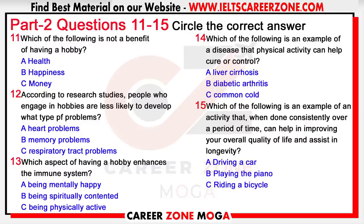Firstly, hobbies can enhance the immune system. Being physically active is great for the body in helping to enhance one's immunity. Physical activity can help prevent or maintain control in some chronic illnesses, such as heart disease, diabetic arthritis, and even some types of cancer. Physical activity done consistently can also help improve your overall quality of life and assist in longevity. Examples include exercising, playing sports, dancing, riding a bicycle, yoga, and even walking.